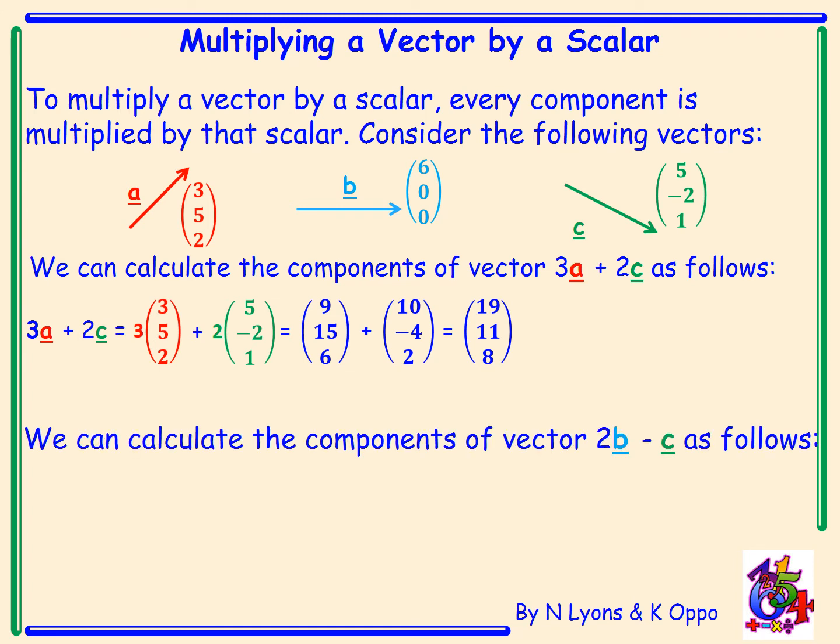We can also calculate components of vector 2b minus c. 2 lots of b is 2 lots of 6, 0, 0, and remember we're going to add negative c. Therefore each component in vector c is multiplied by negative 1 to give negative 5, 2, minus 1. Multiplying the scalar 2 with vector b will give an answer of 12, 0, 0. And combine the two vectors, the final solution is 7, 2, minus 1.